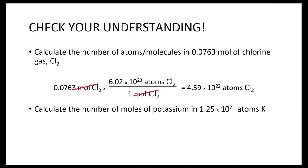Did you set this up correctly? If I started with moles, I have to have my mole down at the bottom to cancel out. We know that for every 1 mole of chlorine, there's 6.02 times 10 to the 23rd atoms of chlorine. I started with 3 sig figs, so I need to end with 3 sig figs.